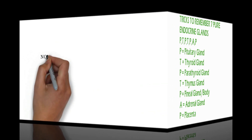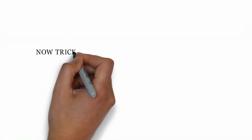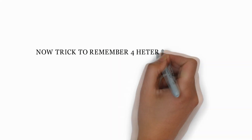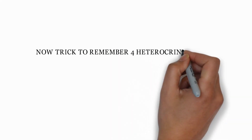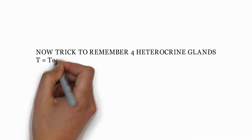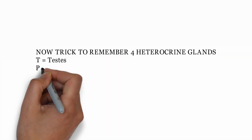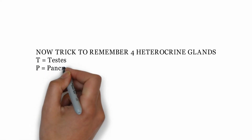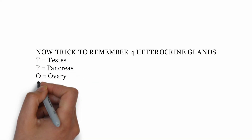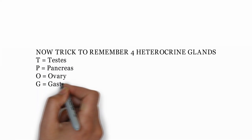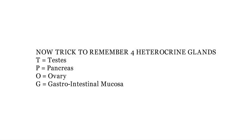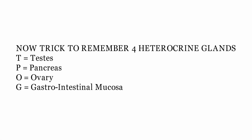Now tricks to remember 4 heterocrine glands. The formula is TPOG: T for testis, P for pancreas, O for ovary, and G for gastrointestinal mucosa.